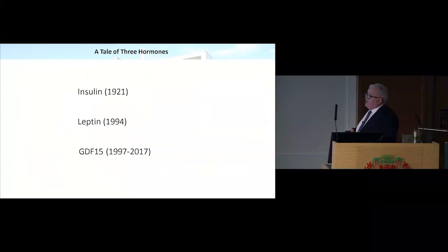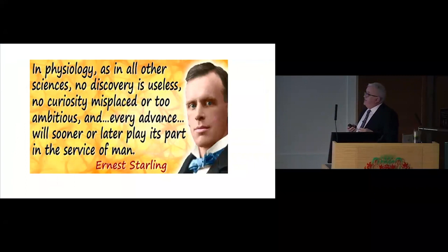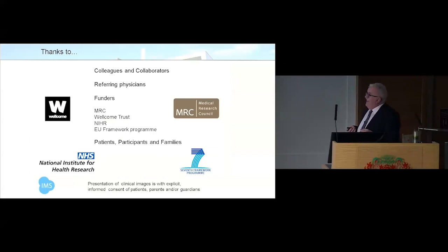Paracelsus would have known this because he knew that many drugs were poisons. The only difference between a drug and a poison is the dose. One of the commonest drugs we've been giving since the 1950s to huge billions of mankind is, in effect, a poison. And it's exerting a large amount of its effect by producing a normal response that happens when we, as an organism, are poisoned. And that is part of its therapeutic efficacy. So I've told you a tale of three hormones: insulin, leptin, and GDF-15. I'll finish with a quote from Ernest Starling: in physiology, as in all other sciences, no discovery is useless. No curiosity misplaced or too ambitious. Every advance will sooner or later play its part in the service of man. I'd like to thank my colleagues and collaborators, our funders, but above all, the patients and participants and families who worked with us. Thank you all for your attention.